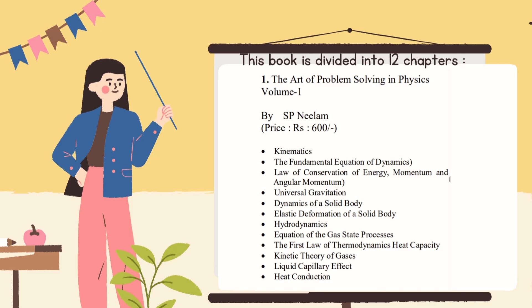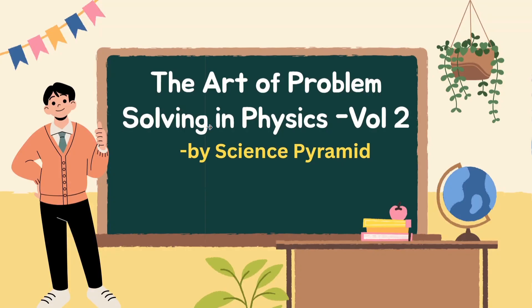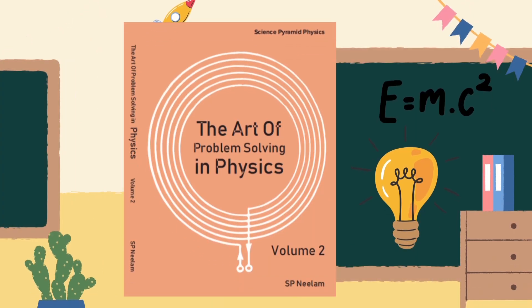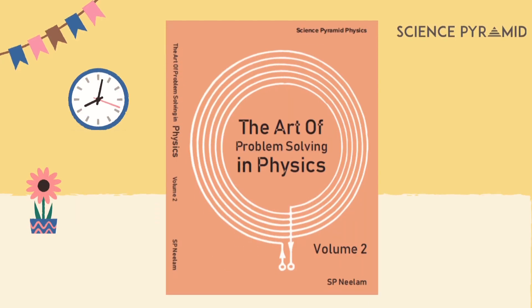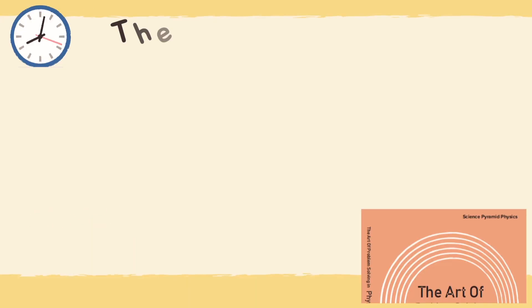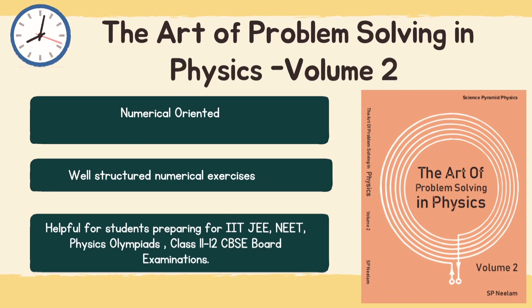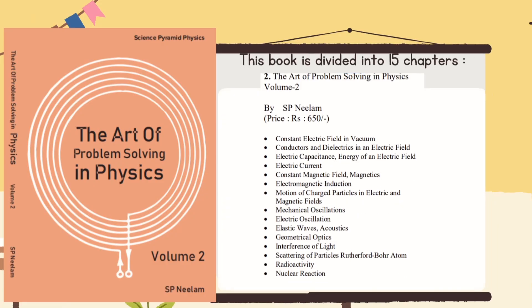Namaste dosto, welcome back to Physics for Cause. I am Shivam Dangwal, and today I am reviewing Volume 2 of a book series that is quickly becoming a favorite among serious physics learners: The Art of Problem Solving in Physics Volume 2 by SP Neelam sir. Priced at rupees 650, Volume 2 is a numerically focused, competition-oriented physics book, especially curated for IIT JEE, NEET, Physics Olympiad students. If you have already used Volume 1, you will know this series is less about long theoretical explanations and more about mastering the art of solving physics numericals strategically.